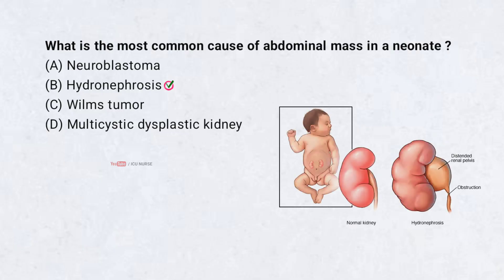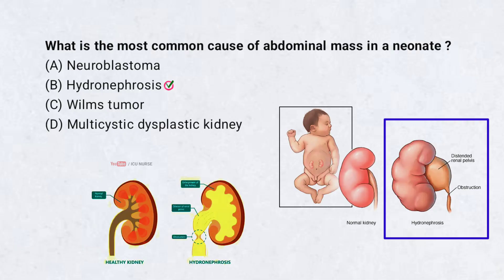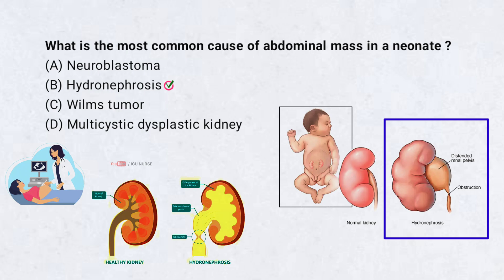Hydronephrosis is the most common cause of an abdominal mass in neonates. It usually results from urinary tract obstruction, which leads to swelling of the kidneys. Many cases are detected during prenatal ultrasounds. Early diagnosis helps guide monitoring or treatment depending on severity. Most mild cases resolve on their own.